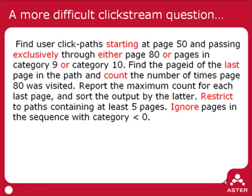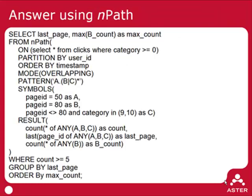NPath can also answer more complicated questions. For example: find all users with click paths that started at page 50 and then passed exclusively through either page 80 or pages in category 9 or category 10. For every such user found, find the page ID of the last page in the path and count the number of times page 80 was visited. Then report the maximum count for each last page and sort the output by that count to find the most frequent last page. We'll restrict this nPath query to paths containing at least five pages and ignore pages in sequences with category ID less than zero.